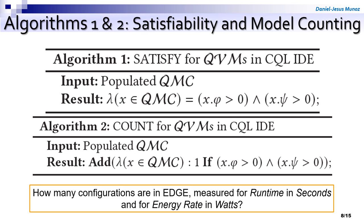Examples of concrete reasoning operations that an expert could request, based on the edge category we presented — the edge product line example — would be: how many configurations are in edge, measured for runtime in seconds and for energy rating in watts.